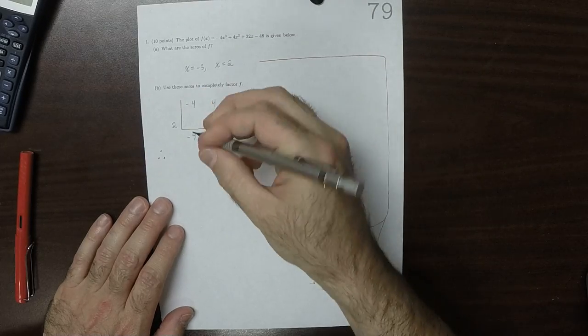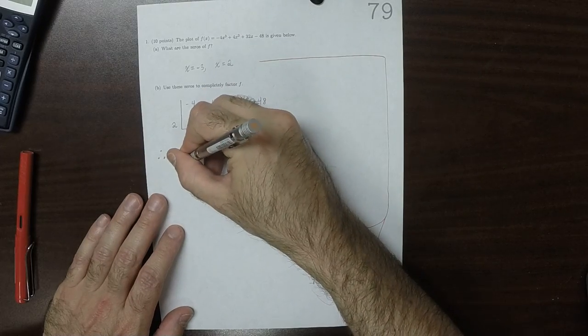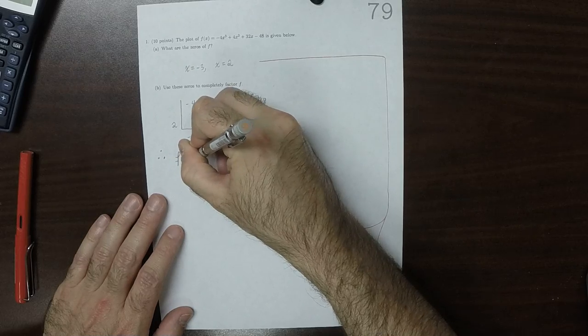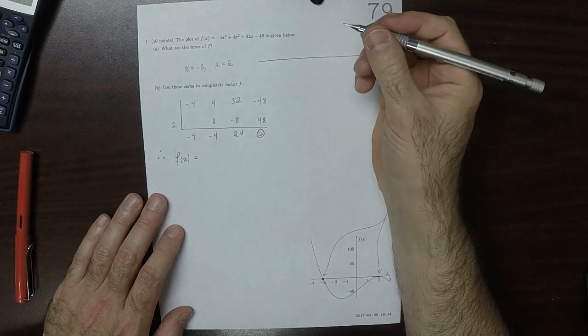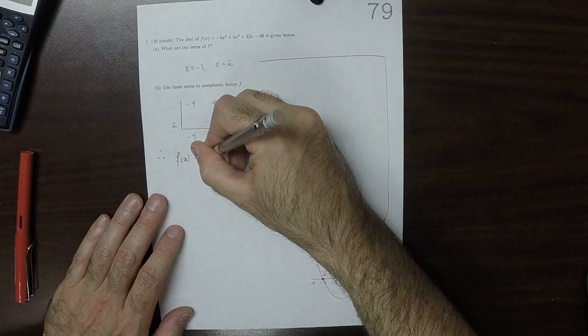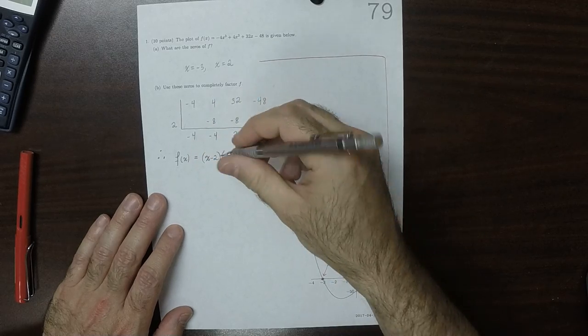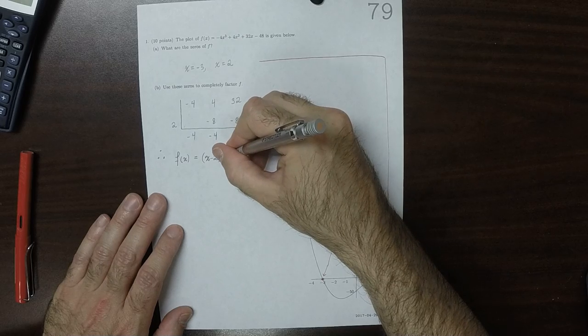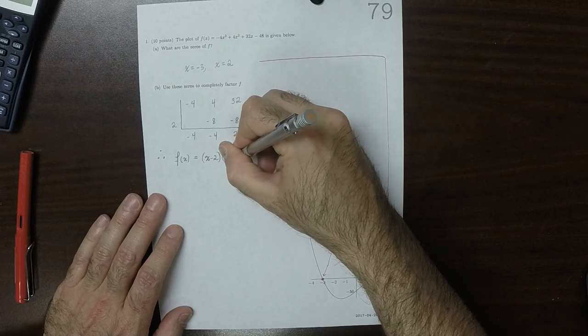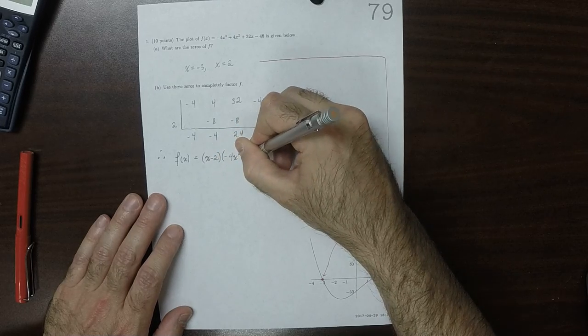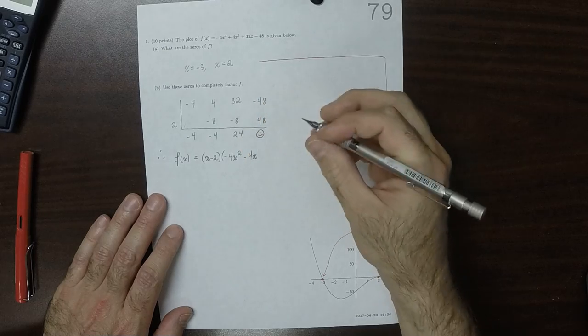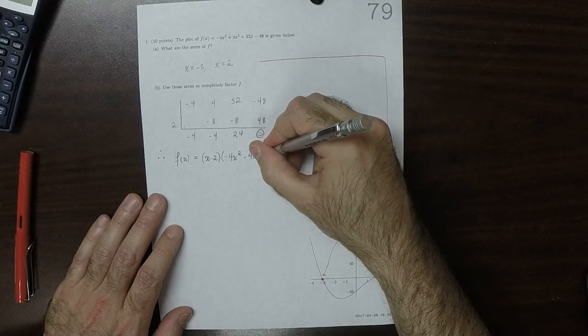As a result, we know that f(x) is (x - 2) multiplied by (-4x² - 4x + 24).